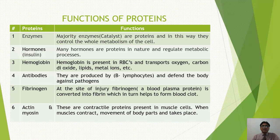Antibodies भी nature में proteins हैं, हमारे immune system का part हैं। Antibodies B-lymphocytes produce करते हैं। B-lymphocytes white blood cells के types हैं, और ये antibodies हमें pathogens से यानि disease causing organisms से बचाते हैं। Fibrinogen एक blood clotting protein है। अगर body पर कोई wound आ जाए और वहाँ से blood का flow शुरू हो जाए, तो fibrinogen fibrin में change हो जाती है, और यह fibrin blood clotting में help करती है, जिससे wounded site पर एक temporary seal बन जाती है और blood का flow रुक जाता है।